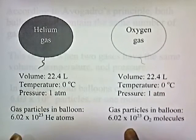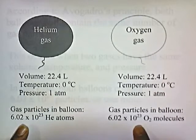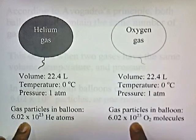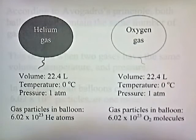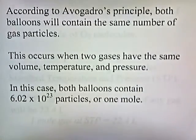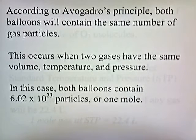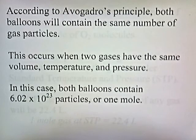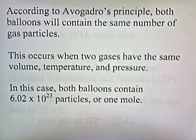Here's an interesting fact: the number of gas particles in each balloon is 6.02 times 10 to the 23rd particles — the same number of particles in each balloon. According to Avogadro's Principle, both balloons will contain the same number of gas particles. This occurs when two gases have the same volume, temperature, and pressure. In this case, both balloons contain 6.02 times 10 to the 23rd particles, or one mole.